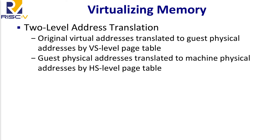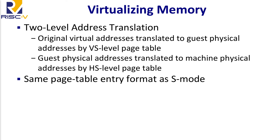For virtualizing the memory system, we took a fairly conventional approach using two-level address translation with paging. When executing in a guest — either in application code or in the OS — virtual addresses are first translated to guest physical addresses by traversing the guest OS's page table. Then each guest physical address is translated by a second level, the hypervisor's page tables, into machine physical addresses. This is the same way it works in x86-64 or ARM. One notable difference from x86-64 is that the hypervisor page tables use the same format as the supervisor-level page tables, which is a notional simplification.